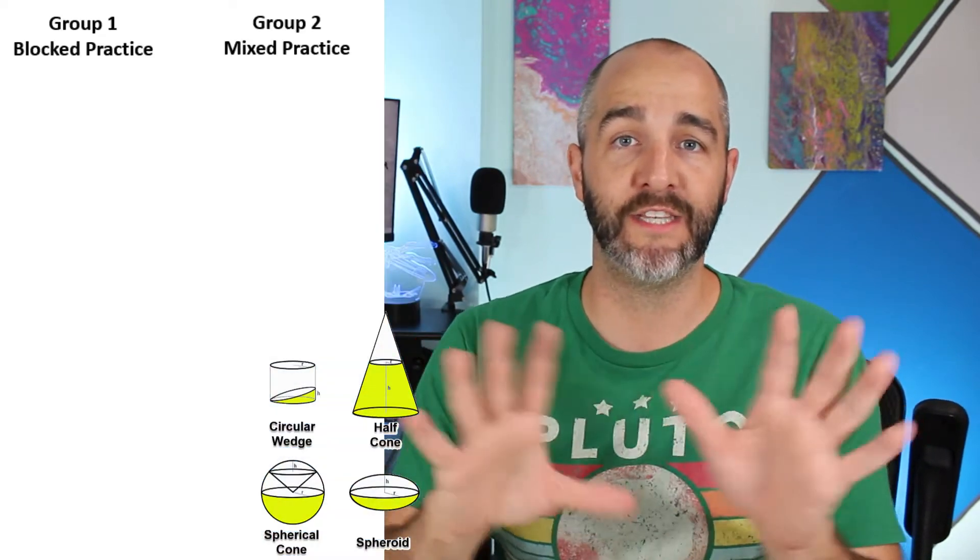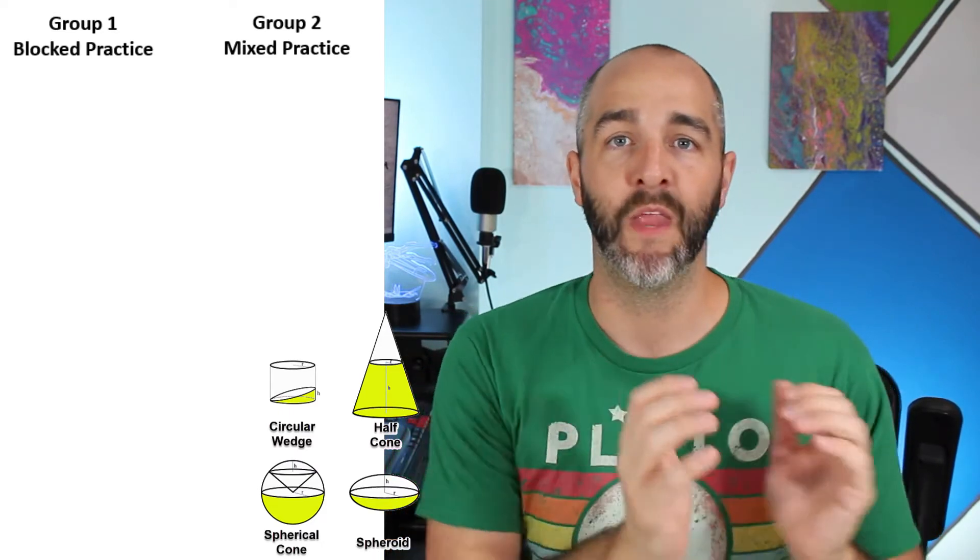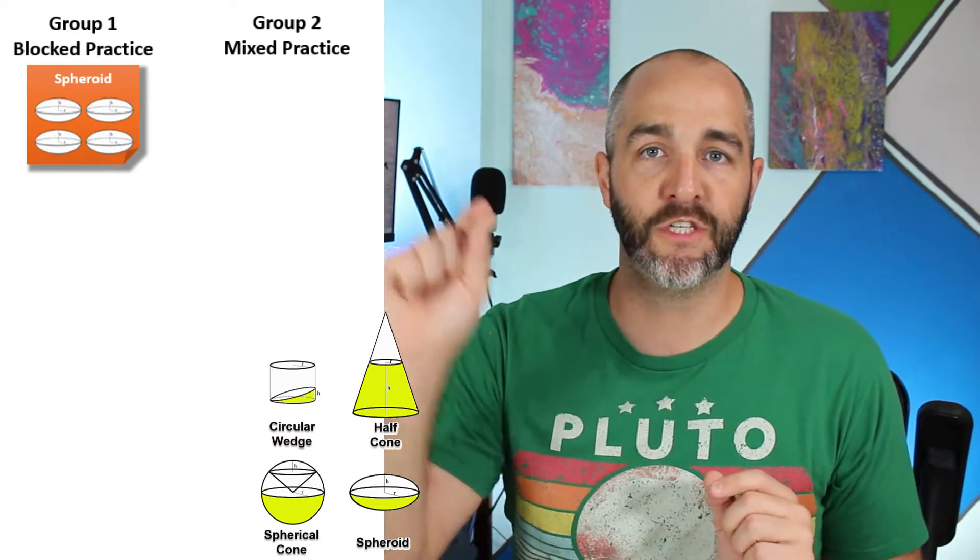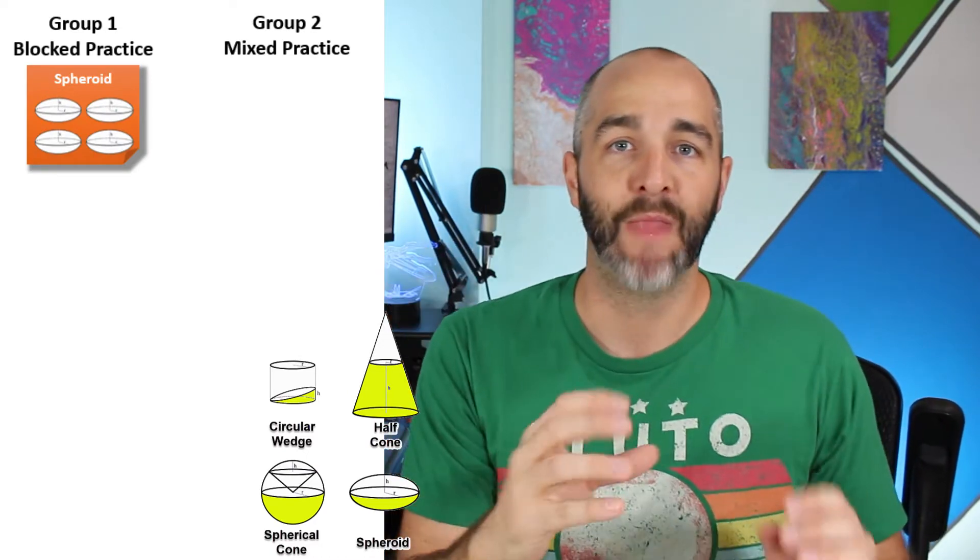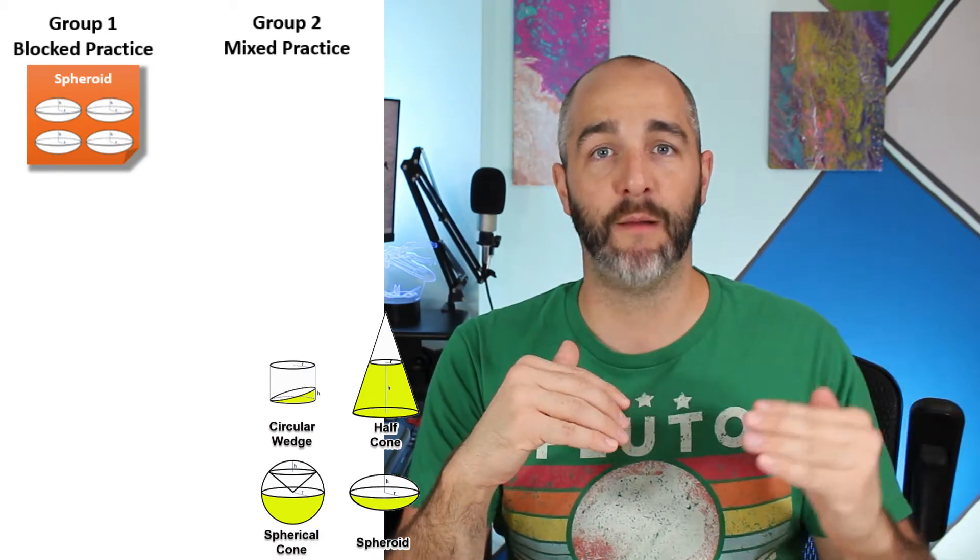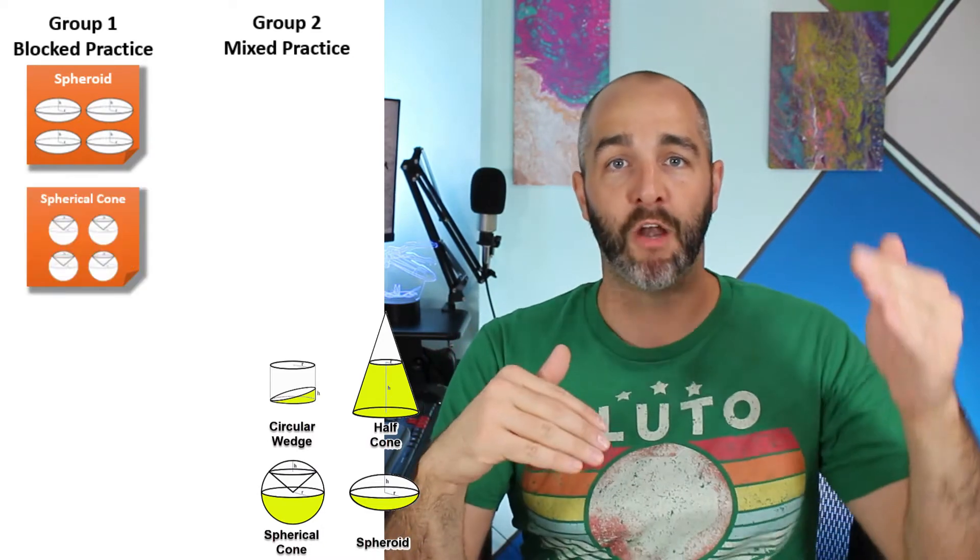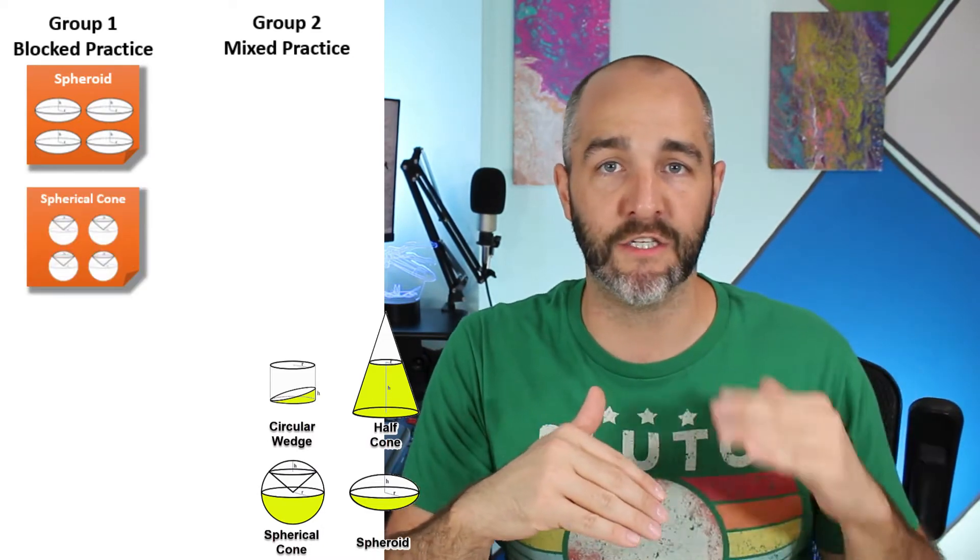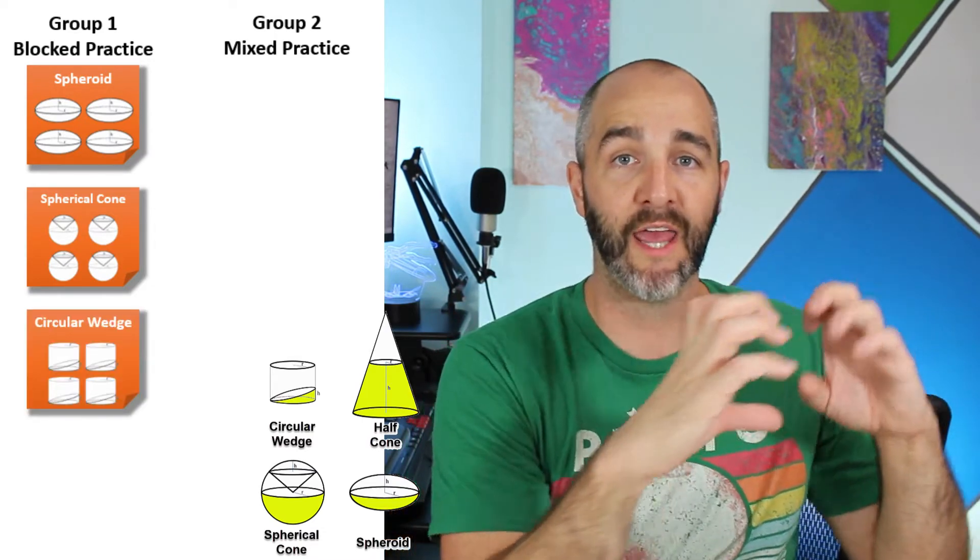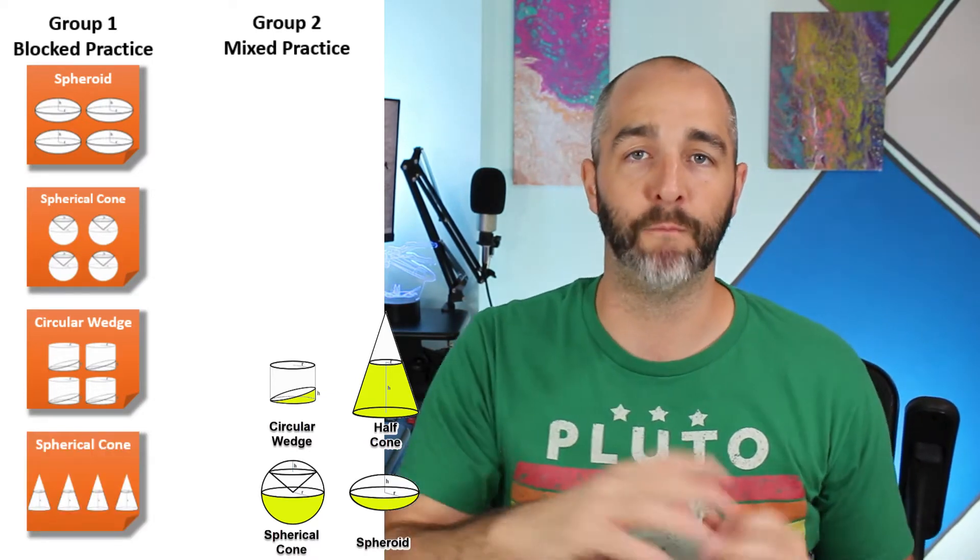And so essentially what they did to study the most effective technique is they put students into two different groups. And the first group is called blocked practice. Now, what does that mean? They took the first geometric solid, let's call it a spheroid. And on day one, they had the students practice questions on solving geometry specific to the spheroid. They blocked practice for that geometry. And then on day two, they moved to the second geometric solid. Maybe it was the spherical cone or the half cone, whatever it was. So day two was, again, blocked practice specific to one geometric solid. Same on day three, same on day four.